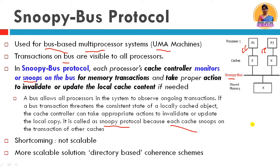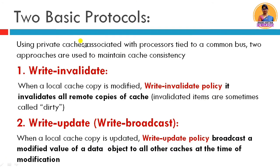The Snoopy Bus Protocol is used in small-scale systems connected through it, because the bandwidth is limited and it cannot connect a large number of processes — that is, it is not scalable. So for larger scale, we move to directory-based coherence schemes.